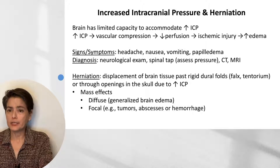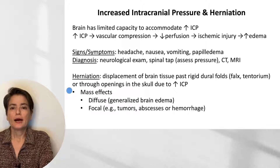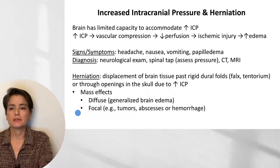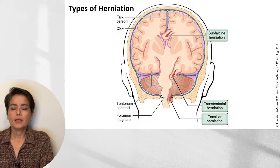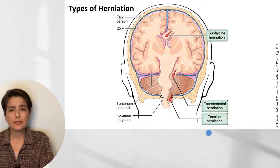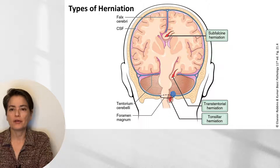Herniation is the displacement of brain tissue past our rigid dural folds — the falx and the tentorium — or through openings in the skull due to increased intracranial pressure. This is a mass effect, which can be diffuse, as we see in generalized brain edema, or focal — for example, with tumors, abscesses, or hemorrhage. Let's review the anatomy: we have our falx cerebri at the midline, our tentorium separating the cerebrum from the cerebellum, and the foramen magnum through which tonsillar herniation can occur.